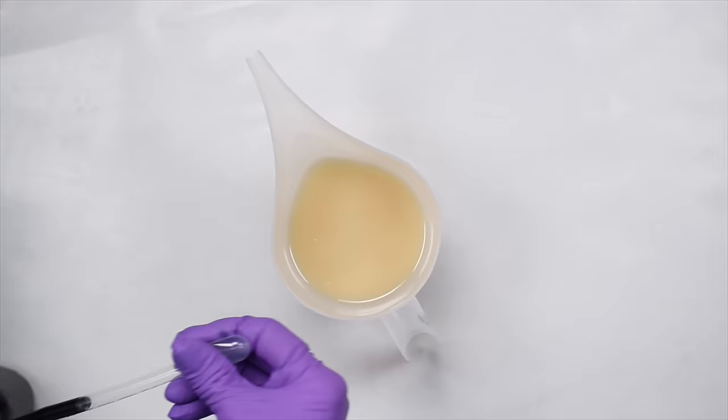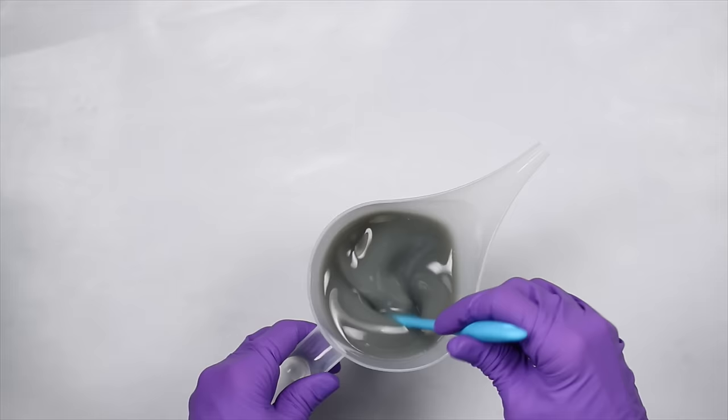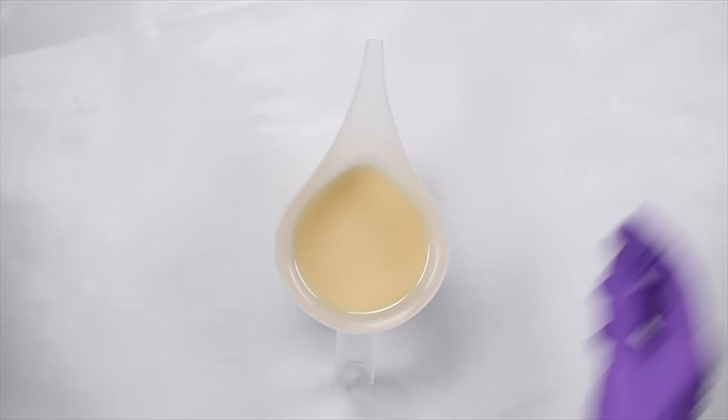For the blue soap, I added some indigo root oil until I was satisfied with the blue color. My indigo-colored raw soap usually looks quite gray until it goes through saponification, and then it turns a pretty steel blue color.